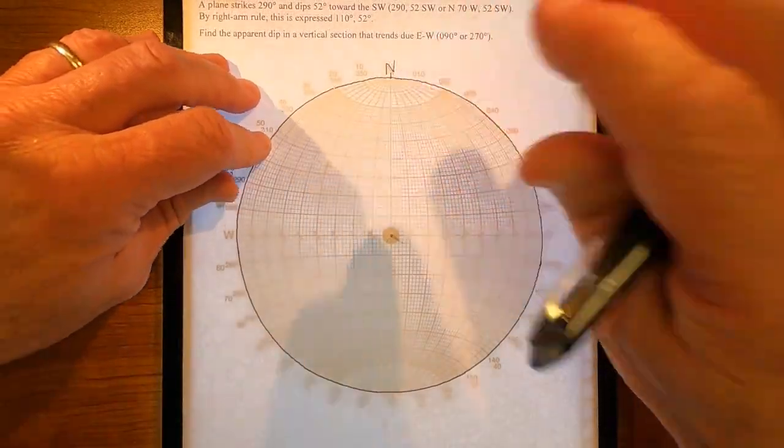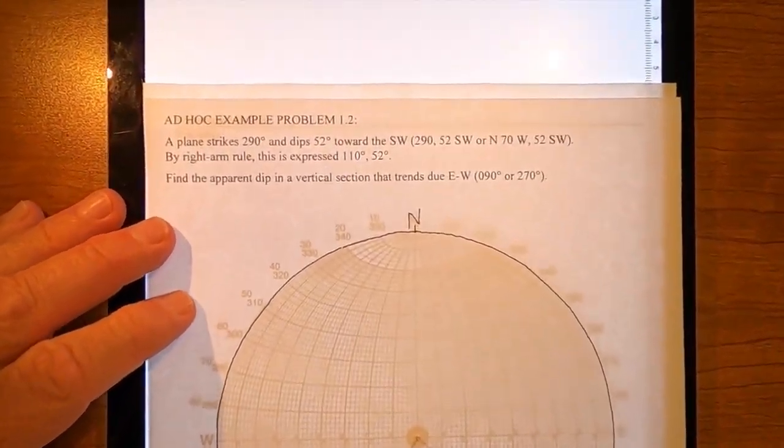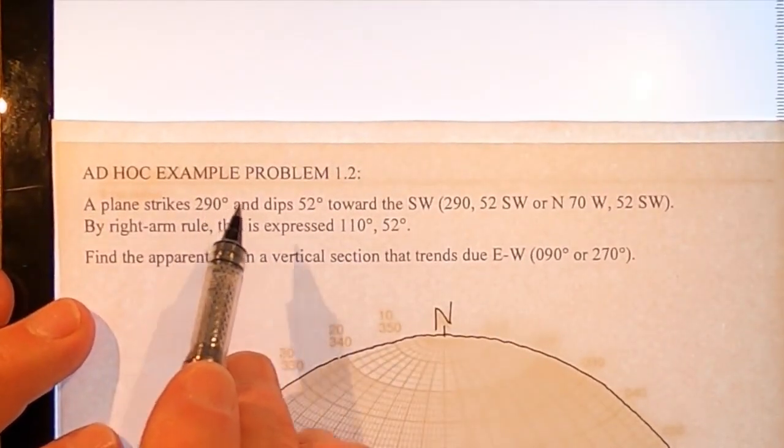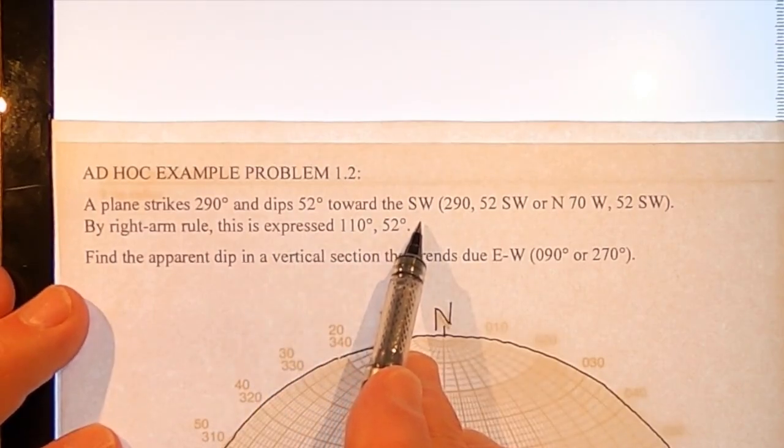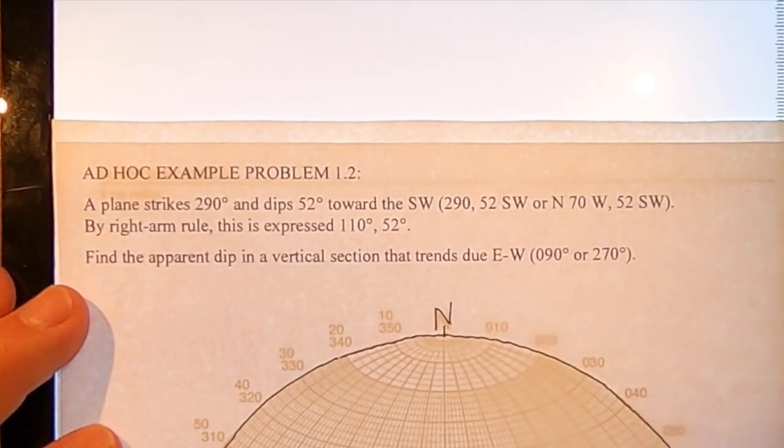Let's look at the problem. A plane strikes 290 and dips 52 to the southwest. It offers these expressions for that. By right arm rule, it's 110, 52.